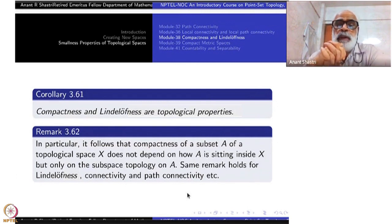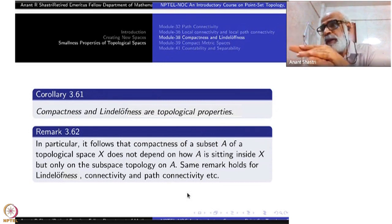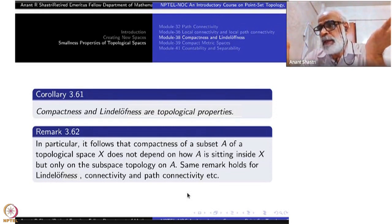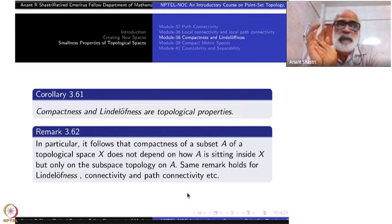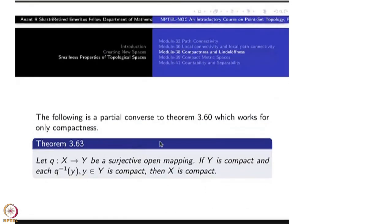In particular, it follows that compactness of a subset A of a topological space does not depend on how A is sitting inside X. Once A is homeomorphic to another A prime — wherever they are sitting inside their respective spaces — if one is compact, the other is compact. The same holds for Lindelofness, connectivity, path connectivity, etc. They are all topological properties — that is the whole idea.